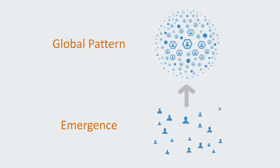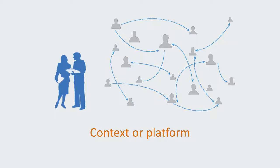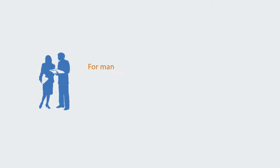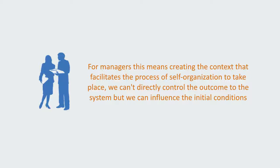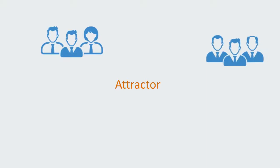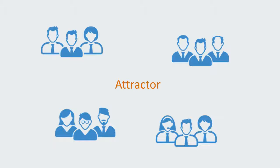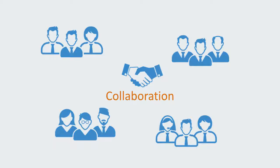Instead of directly aligning the actions of the members towards the desired global outcome, we instead create the context or platform within which the members can interact so as to coordinate locally, and then out of this we get the emergence of some global organization. For managers, this means creating the context that facilitates the process of self-organization. We can't directly control the outcome to the system, but we can influence the initial conditions by creating a conducive context that represents an attractor towards coordination and cooperation between the members.